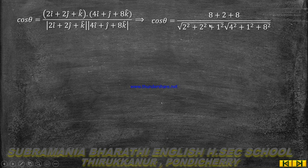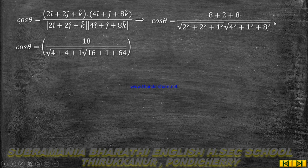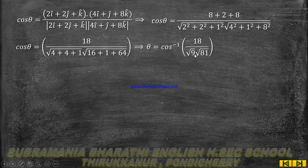Computing: the numerator is 8 plus 2 plus 8 equals 18. For the first modulus: 2 squared is 4, 2 squared is 4, 1 squared is 1, giving root of 9. For the second modulus: 4 squared is 16, 1 squared is 1, 8 squared is 64, giving root of 81. So the denominator is root of 9 times root of 81, which equals 3 times 9 equals 27.